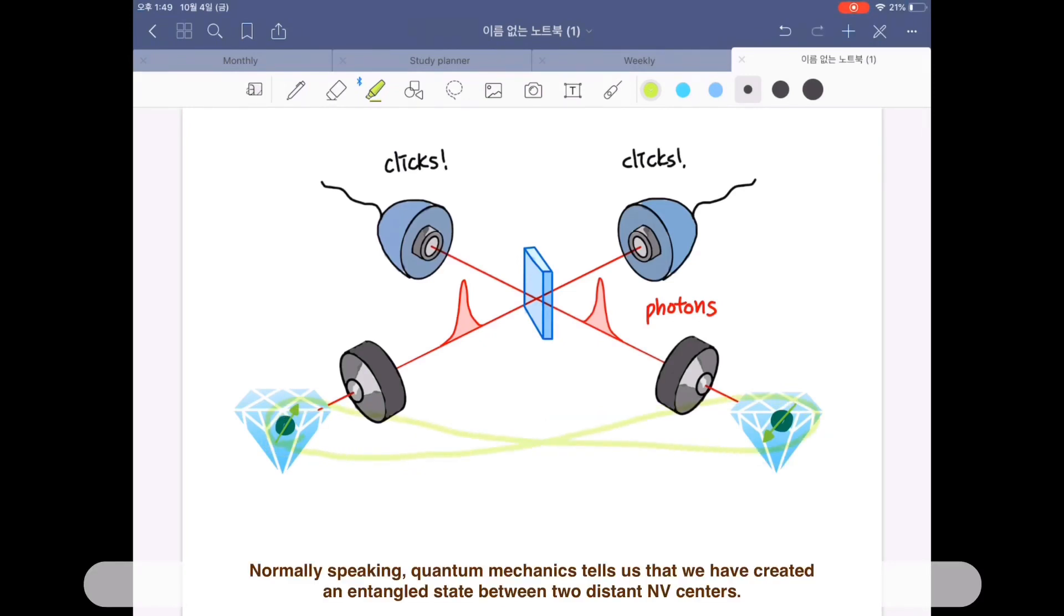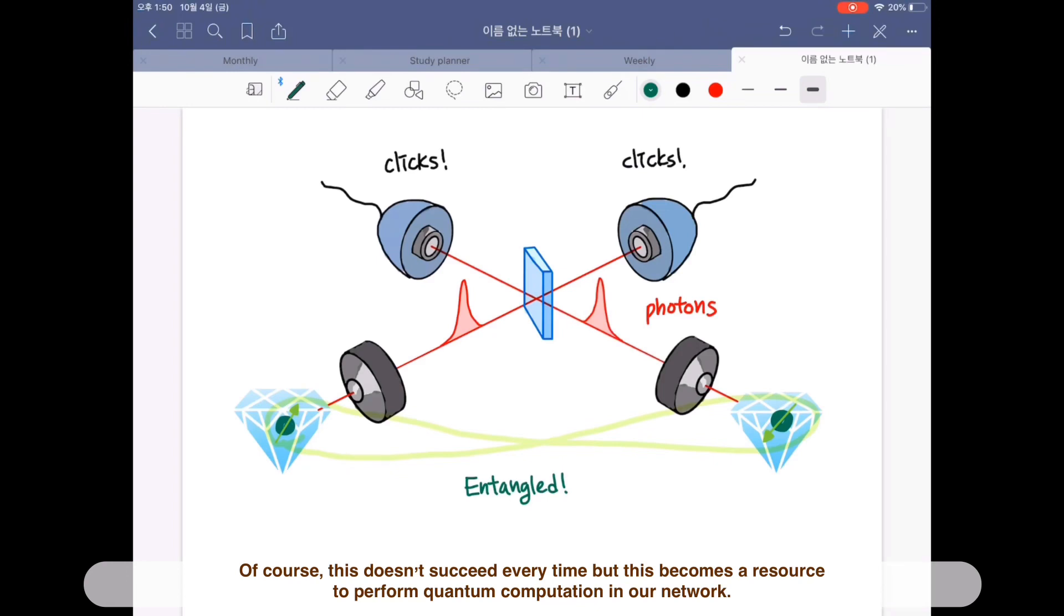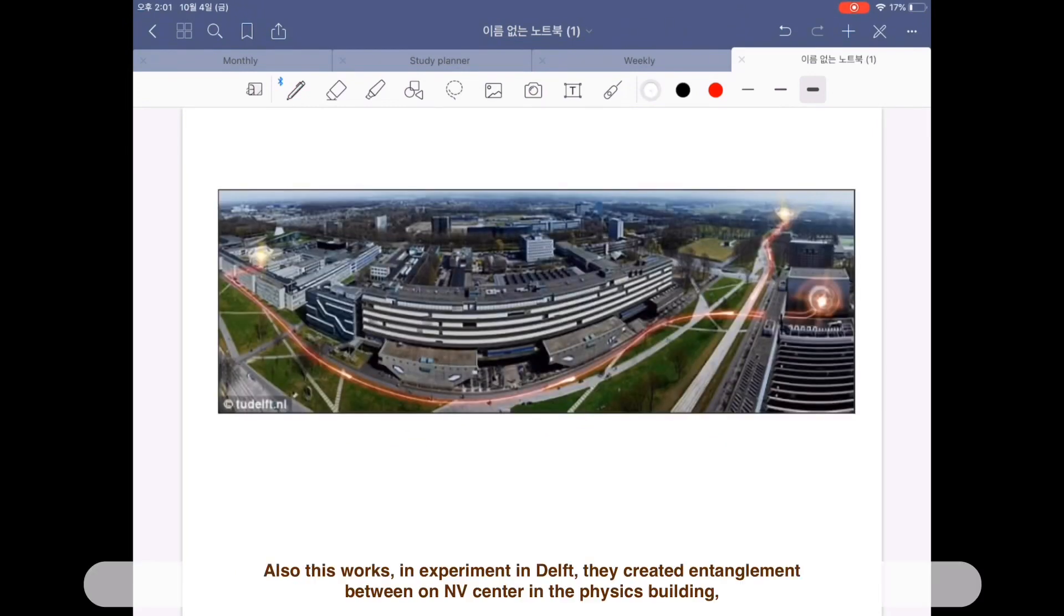Normally speaking, quantum mechanics tells us that we have created an entangled state between two distant NV centers. Of course, this doesn't succeed every time, but this becomes a resource to perform quantum computation in our network.